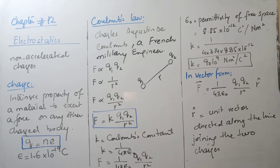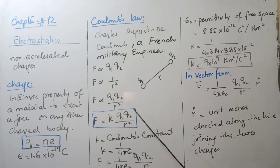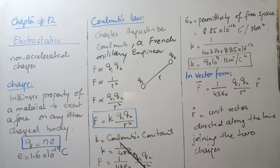Combining these results: F is directly proportional to q1·q2 / r². Coulomb mathematically found the value of the proportionality constant k. You need to memorize: k = 1 / (4πε₀).